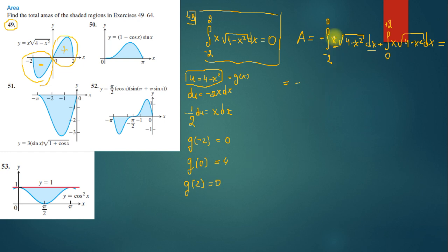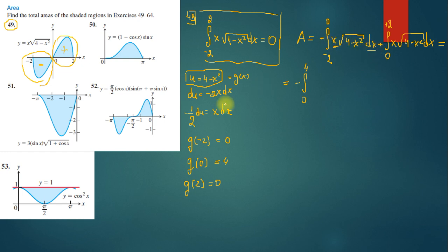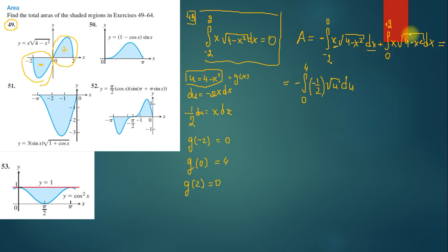For the first integral, the limits change from 0 to 4, and x dx becomes -1/2 du, while √(4 - x²) becomes √u. So I write: minus integral from 0 to 4 of (-1/2)√u du. For the second part, using the same substitution, g(0) = 4 and g(2) = 0, so the limits go from 4 to 0, and x dx = -1/2 du.